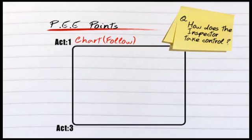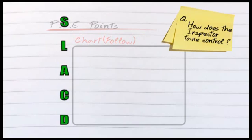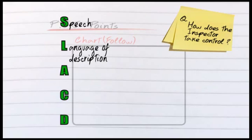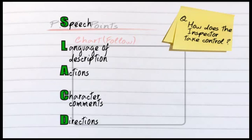Each of these is going to involve a technique called SLACT. It's easy to remember and it stands for: the speech of the character, the language of description, the actions, character comments, and the directions, as in the stage directions that I mentioned.